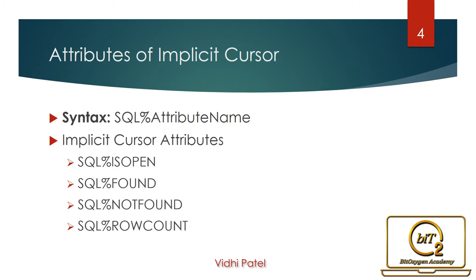We have four attributes of the Implicit Cursor to check its status. The syntax of Implicit Cursor is SQL% followed by the attribute name. Here, SQL is the Implicit Cursor. The four attributes are: SQL%ISOPEN, SQL%FOUND, SQL%NOTFOUND, and SQL%ROWCOUNT.